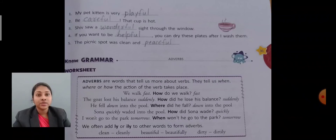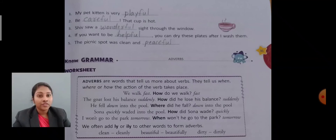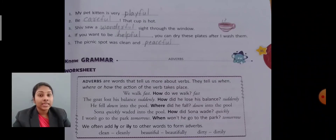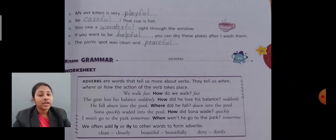Third sentence: 'She saw a wonderful sight through the window' — wonder plus full equals wonderful. Fourth sentence: 'If you want to be helpful, you can dry these plates after I wash them' — help plus full equals helpful. Fifth sentence: 'The picnic spot was clean and peaceful' — peace plus full equals peaceful. So we learned how to add 'full' to certain words to form new words.